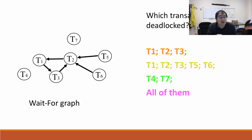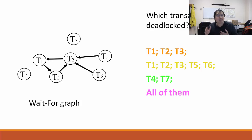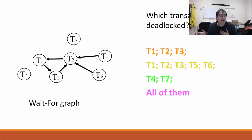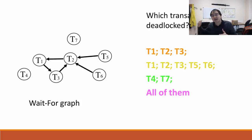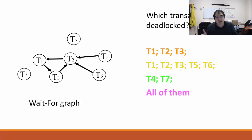None of these three transactions will proceed until this deadlock cycle is resolved. The other terrible part is that anybody waiting on any part of this cycle is also deadlocked. Transactions T5 and T6 are also waiting for this deadlock cycle to resolve because they can't proceed until T2 can proceed, but T2 can't proceed because it's part of this cycle. So the deadlocked transactions are T1, T2, T3, T5, and T6.